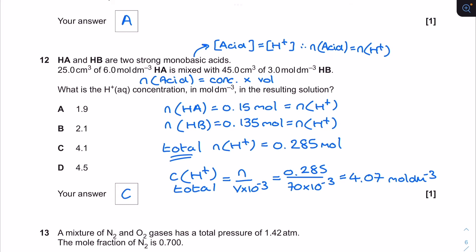For question 12 we've got two strong monobasic acids being mixed together and we need to find out what the hydrogen ion concentration is in the resulting solution. They are strong monobasic acids so their concentrations are equal to their respective concentrations of H plus. For each of them I'm going to find out their mole values from their concentrations and volumes. That gives me their moles of H plus which I add together to give me a total H plus value. Then I turn that total H plus into a concentration of H plus using the volume of both solutions added together. The correct answer comes out as 4.07 but that's going to be 4.1 option C.